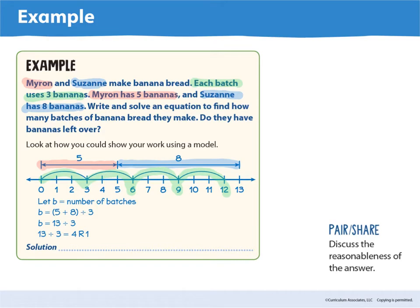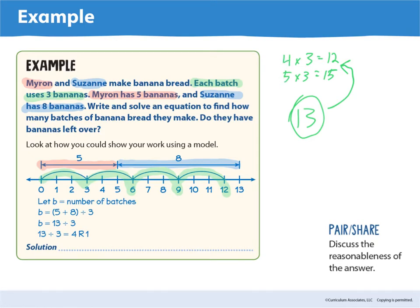Another way to think about it: they have thirteen bananas total, going up by three. Four times three equals twelve, five times three equals fifteen — thirteen falls between those, so they make more than four but less than five batches. On the number line: one batch, two batches, three batches, four batches — they can make four batches and they'll have one banana left over as the remainder.